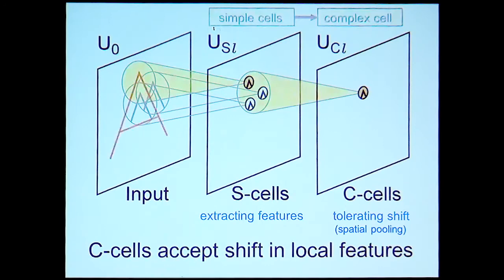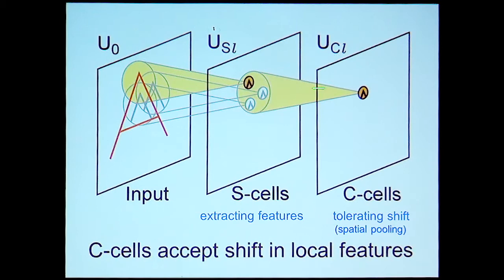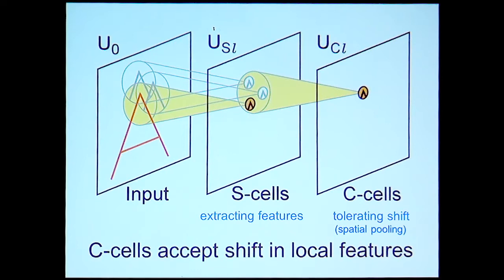Each S-cell has a small receptive field and receives information from a small area of the input pattern. For example, a cell has already learned a lambda-shaped feature at a given location. Each cell has a receptive field in slightly different locations. C-cells receive input connections from a group of S-cells in a small area, so if one of these S-cells is active, the C-cell becomes active. If the input pattern shifts, another S-cell responds to the feature, but this C-cell still keeps responding even if it shifts further.